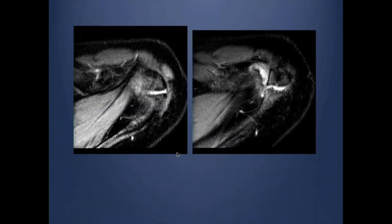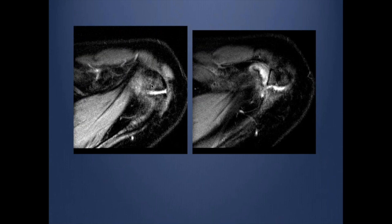Os acromiale is a non-united ossification center at the tip of the acromion. It is very important to mention, particularly if you see a fluid cleft between the os and the underlying acromion, as this indicates pseudoarthrosis and movement of the os acromiale. Every time the lateral deltoid head contracts, it pulls the os acromiale — which is freely mobile — and pushes it against the supraspinatus, resulting in underlying impingement. It is best seen on axial images, especially when a fluid cleft is present.